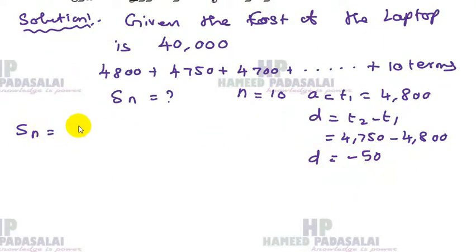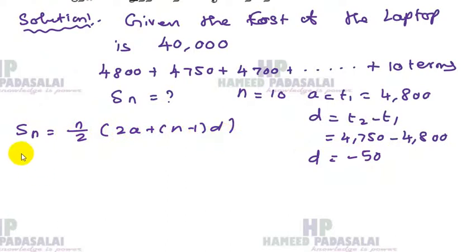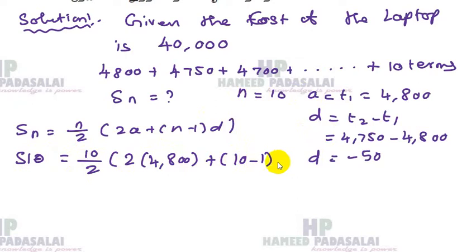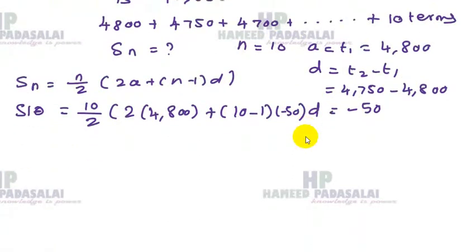Now we have to use the sum formula: S_n equals n by 2 times 2A plus n minus 1 into D. So S_10 equals 10 divided by 2, with 2A equal to 4,800, n equal to 10, and D equal to minus 50.